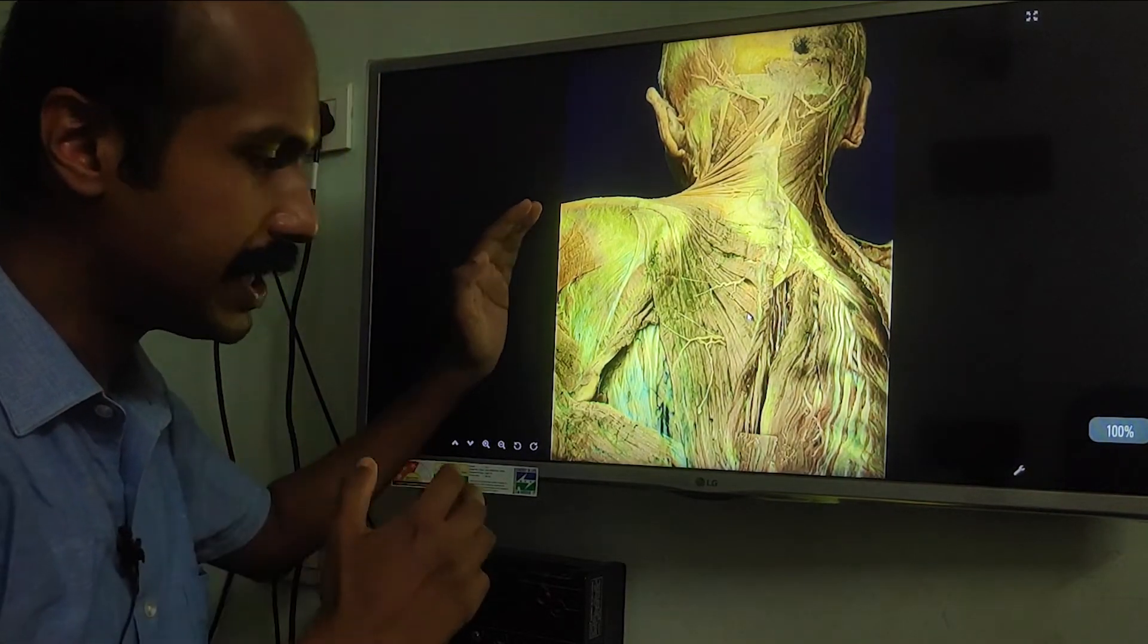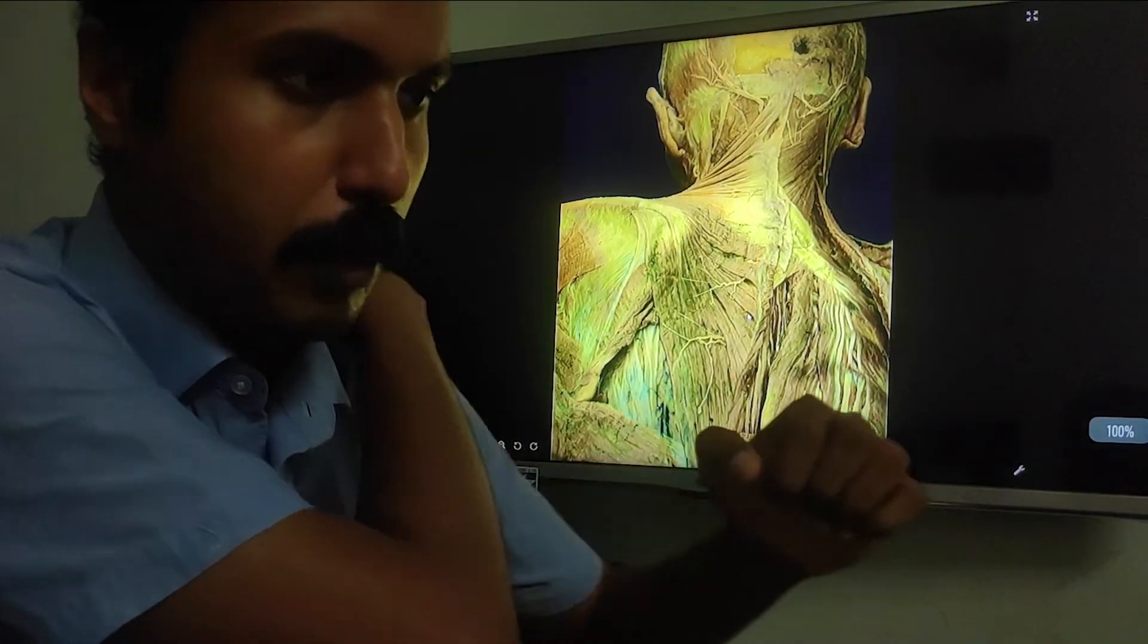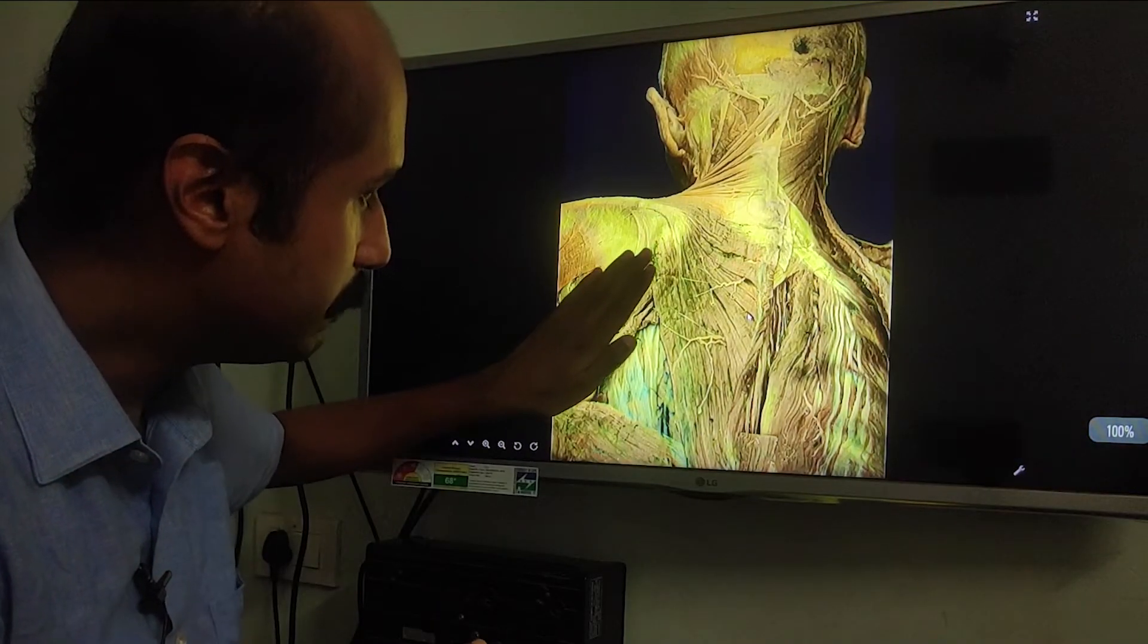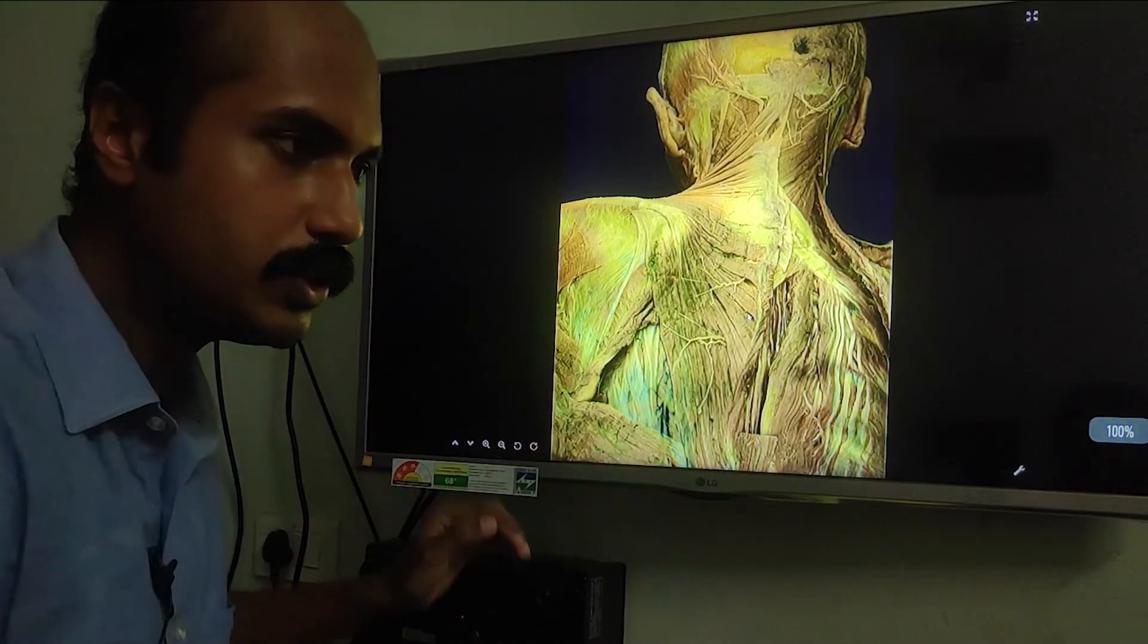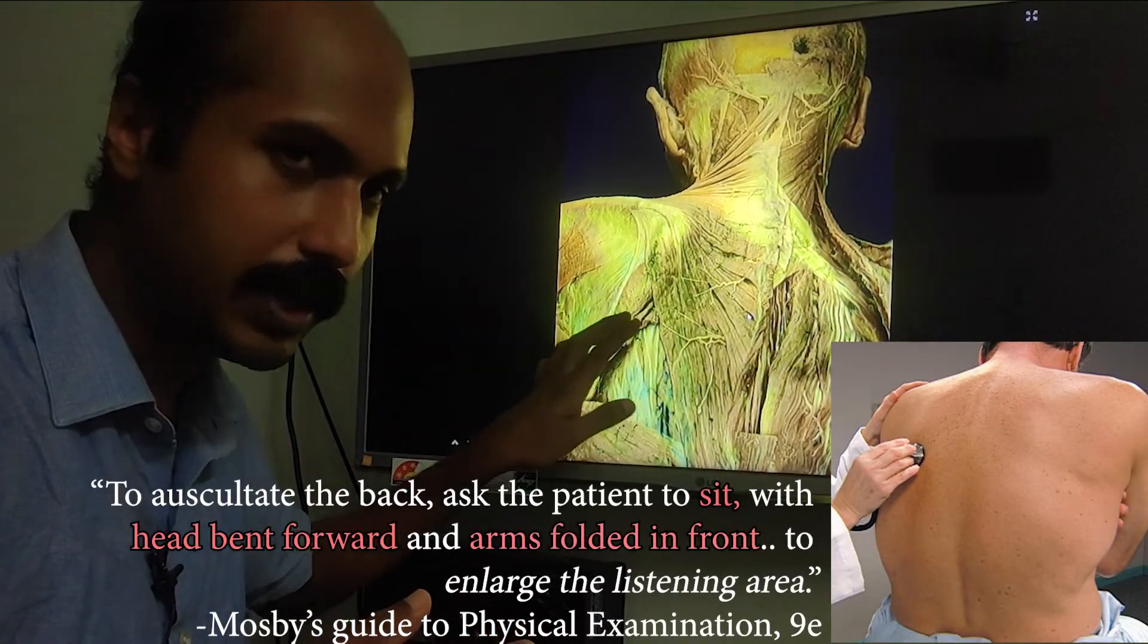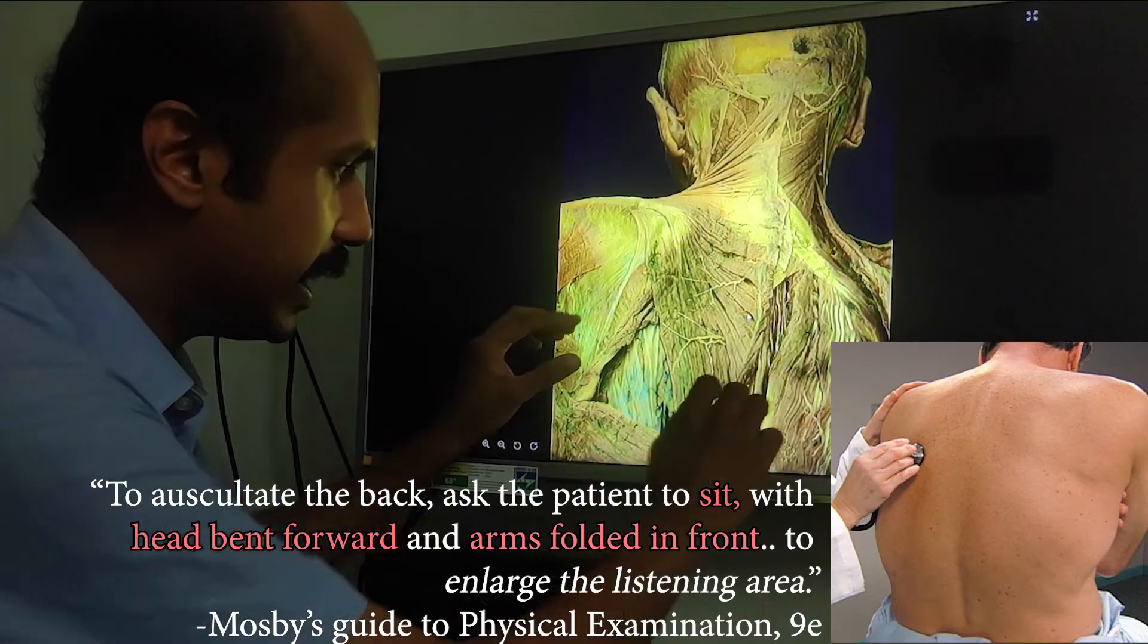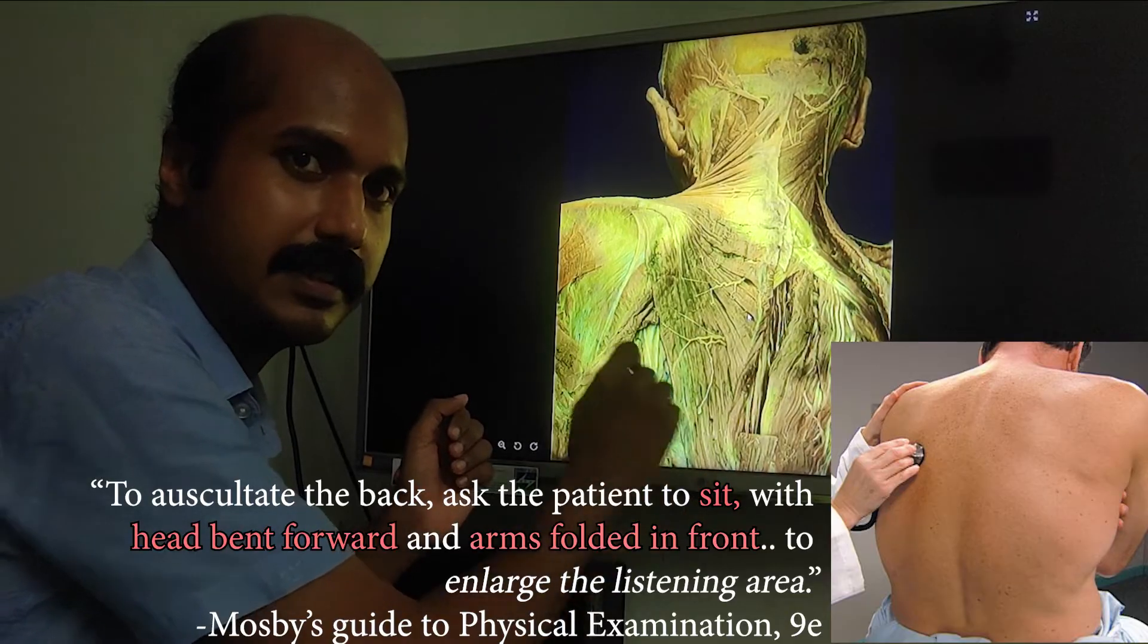You can cause a protraction of the scapula by bringing your hand forwards or bringing your hand towards the opposite shoulder, and the left scapula will be protracted. This will create movement of the medial border more laterally, expanding the triangle of auscultation. The ideal position of the patient to hear the best lung sounds will be in a bent and crossed hand position, in which the triangle of auscultation will be widened on both aspects.